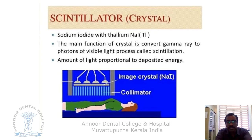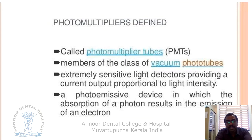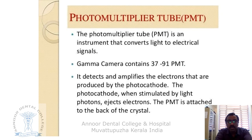Photomultiplier tubes (PMTs) are placed in a vacuum and are extremely sensitive to light. A photoemissive device is one in which absorption of a photon results in the emission of an electron. The photomultiplier tube converts light to electrical signals. A gamma camera contains 37 to 91 photomultiplier tubes. They detect and amplify electrons produced by the photocathode — when stimulated by light, the photocathode ejects electrons. The PMT is attached to the back of the crystal.